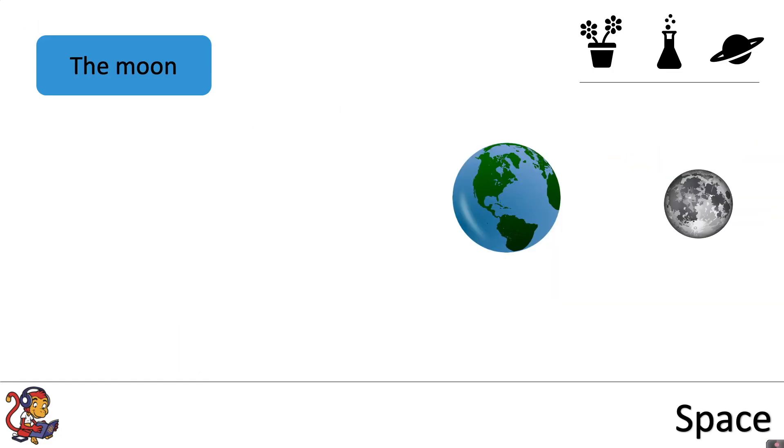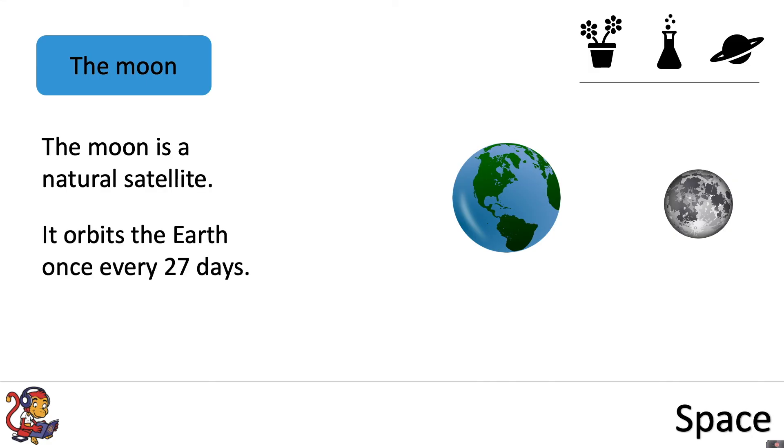The Moon is another object in the night sky and the Moon is a natural satellite. It orbits the Earth once every 27 days.